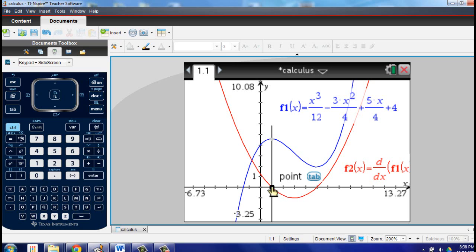You can see that the zero on the derivative is a maximum, a relative maximum, on the original function. Which is exactly the behavior that we would expect, but might not be obvious to you as a student.